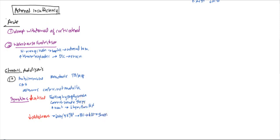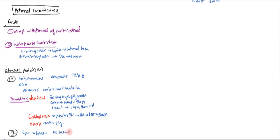Without cortisol, ACTH is not suppressed, so ACTH rises and this can lead to skin hyperpigmentation. For secondary adrenal insufficiency, the cause is pituitary deficiency, which decreases ACTH and in turn decreases cortisol. Unlike primary Addison's, there is no skin pigmentation, and aldosterone levels remain normal.